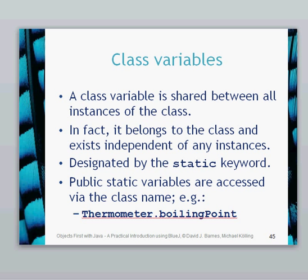This is designated by the static keyword. That's why I just mentioned the word static just then. And public static variables are accessed via the class name. So for example here, if the name of the class was thermometer, we would do Thermometer as the name of the class, as opposed to an instance of the class, dot boilingPoint which is the class variable.